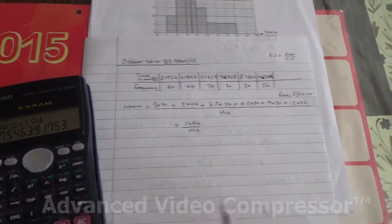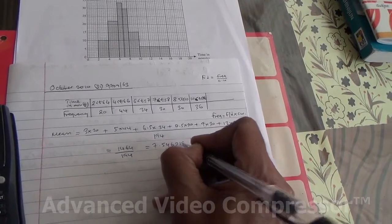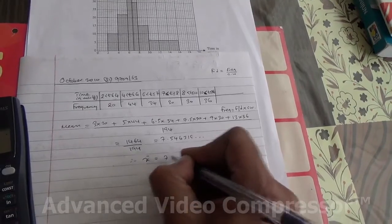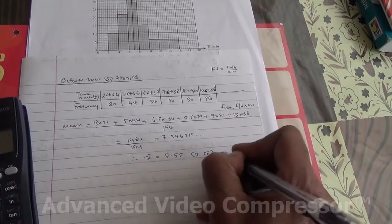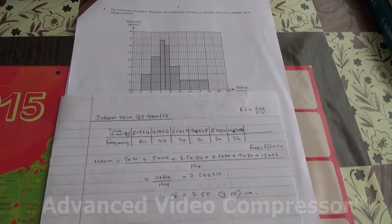We're going to end up with 7.546319 and so on. Therefore, the mean is going to be 7.55 to three significant figures. So this is the second part of the question. Now for the third part.